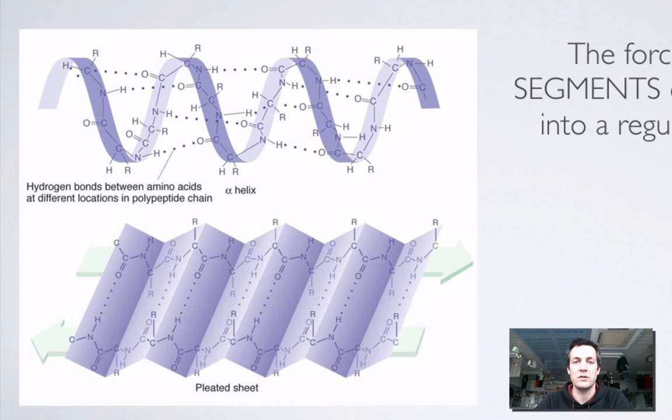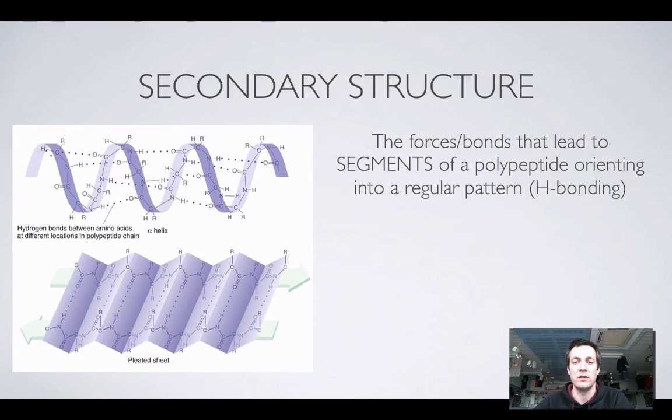And you can see here that this gives rise to things called alpha helixes and pleated sheets. But as I say, we'll look at these in more detail later.